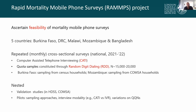The interview modality is what is referred to as computer-assisted telephone interviewing — in practice, a live operator dials a number and conducts an interview with the respondent. The samples will be constituted through random digit dialing, meaning that numbers will be randomly generated. We aim to conduct between 15,000 and 20,000 interviews in each country spread over 12 months, which is the order of magnitude needed to obtain reliable mortality estimates.